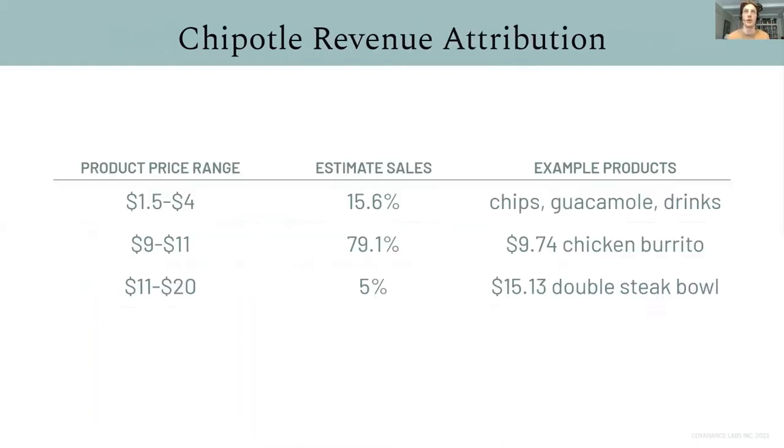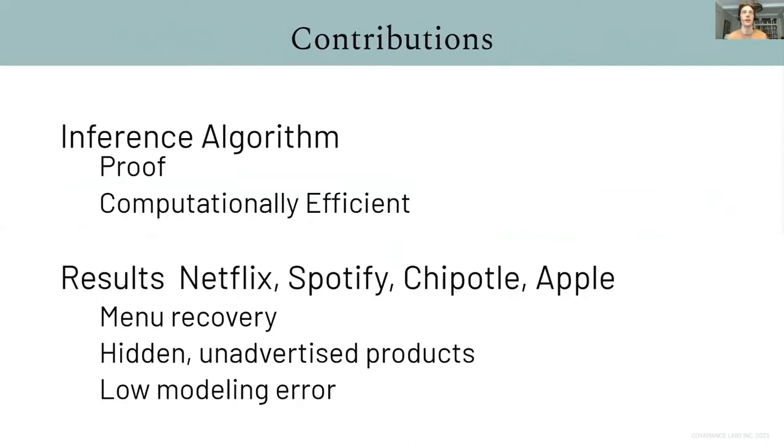In fact, using our method, we can break down Chipotle sales according to price range. So, for example, almost 80% of sales we estimate to be in a really narrow $2 range from $9 to $11, which makes sense because that's the cost of a chicken burrito and other products like that.